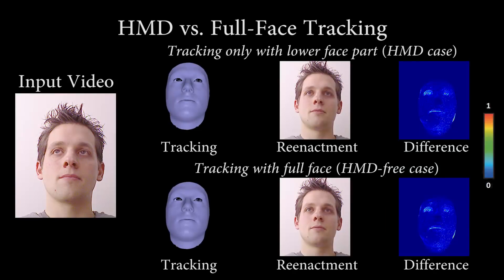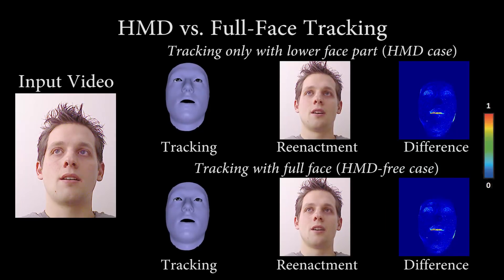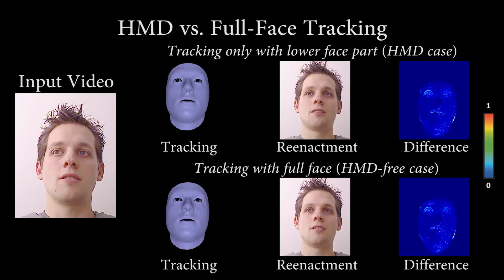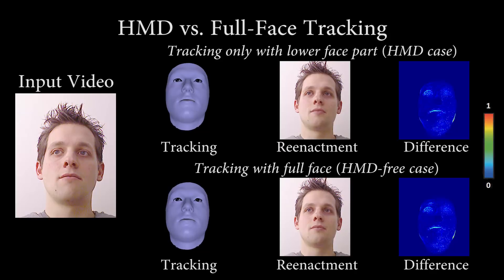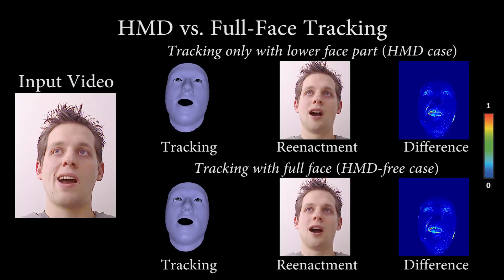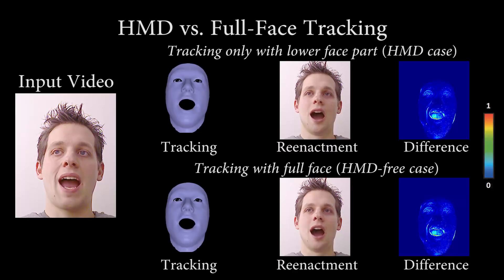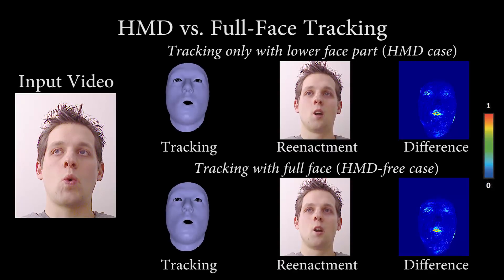Here we evaluate the loss of information when only the lower part of the face is visible. To this end, we self-reenact the actor. The color difference on the right shows that our results are very close to the ground truth video stream, even when a significant part of the face is occluded.